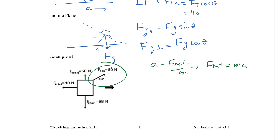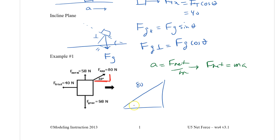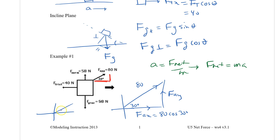The applied force is 80 newtons at 30 degrees. We need to figure out the x and y directions. Drawing it out: the magnitude is 80, the angle is 30 degrees, so FA_x equals 80 times cosine of 30 degrees. Be careful — the angle must be measured from the x-axis. That gives us 69.3 newtons.